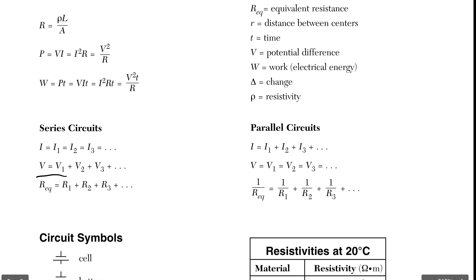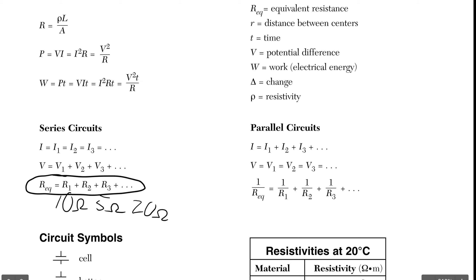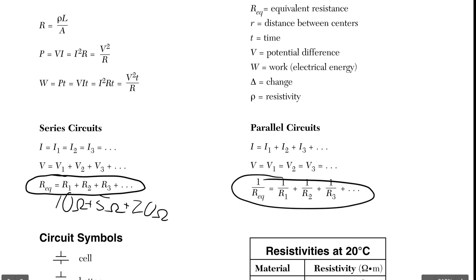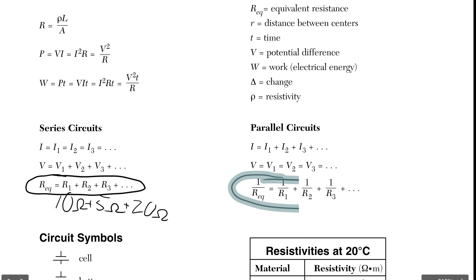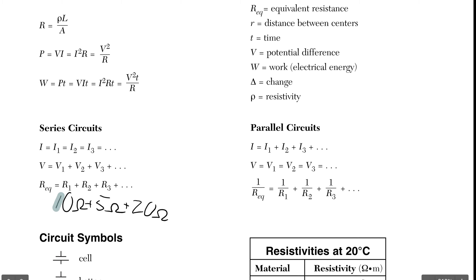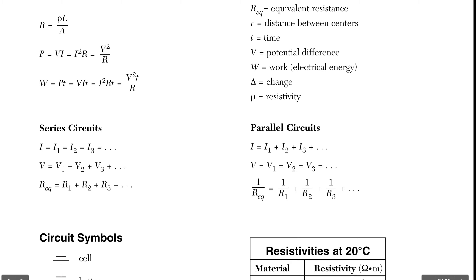For Series Circuits, the resistances just add up. It's kind of what you would think it would be. If we have 10 ohms, 5 ohms, and 20 ohms—three different resistors—you just add them together and you get 35 ohms. That's the total resistance. Pretty straightforward. For Parallel, the equation looks weird, and we'll show you where that equation comes from. Parallel is very different from Series.